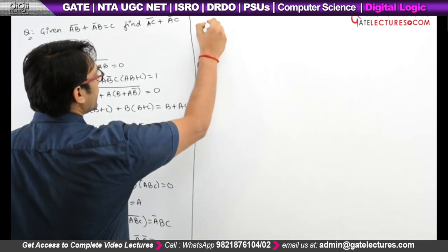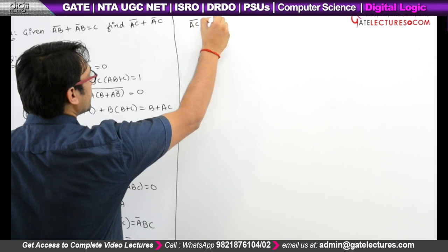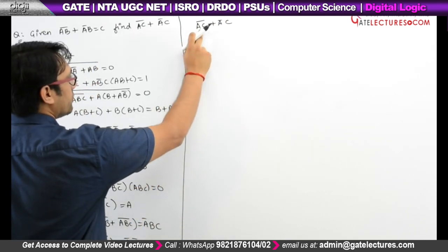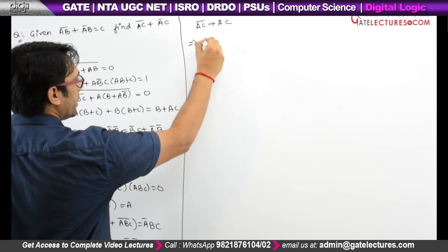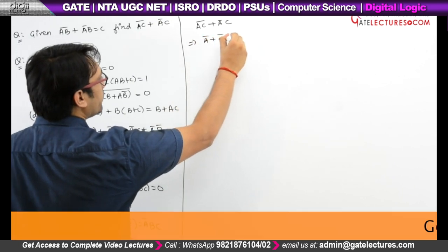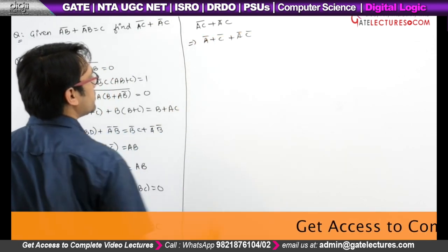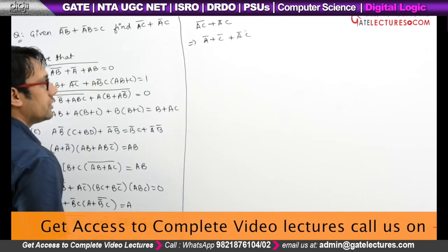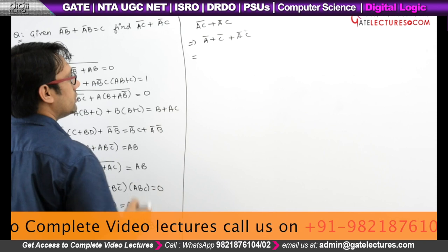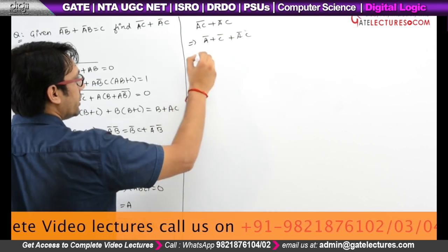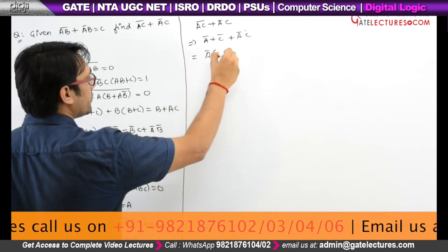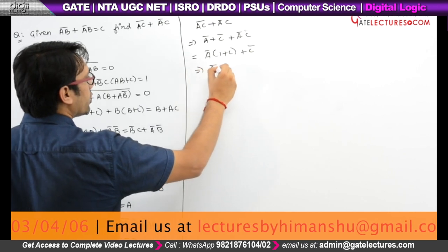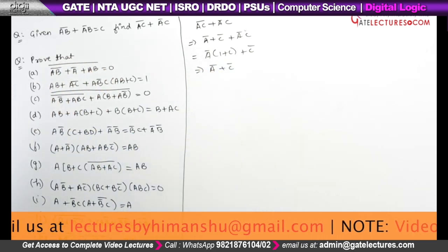We have (AC)' + A'C. You can apply De Morgan's law here, so it can be written as A' + C' + A'C. Take A' as common, so it is A'(1 + C) + C', which is equal to A' + C'.